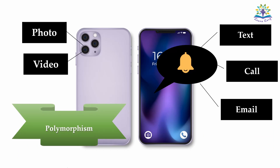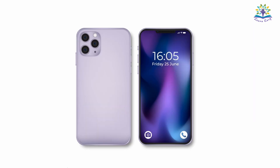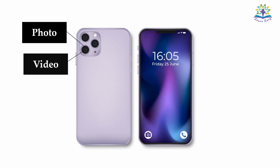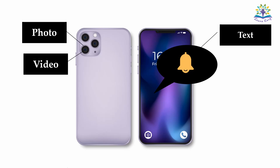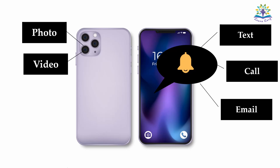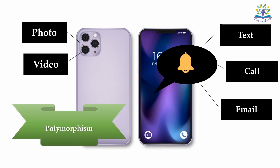Polymorphism is a property by which the same data or function can be used in multiple ways. Consider the attribute camera — it can be used to take a photo or video. Consider the behavior notification — we receive a notification when we get a text, call, email, etc. So the same data or the same function can be used in multiple ways. This feature is known as polymorphism.